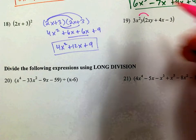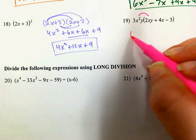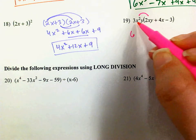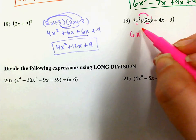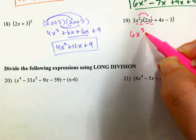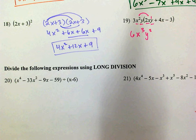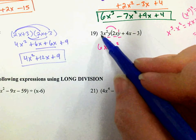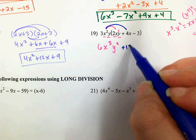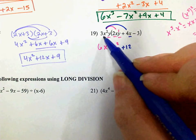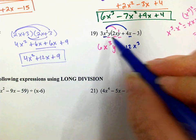So I've got 3 times 2, which is 6. I've got x squared times x — that's 3 x's in total — and y times y, which is y squared. Now I'm going to distribute 3x squared y to 4x: 3 times 4 is 12, x squared times x is x cubed, and then y.